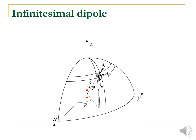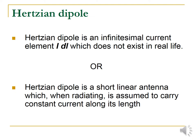Next we can see the graphical representation of an infinitesimal dipole along x, y and z axis. The Hertzian dipole is an infinitesimal current line that is ideal — it is denoted as ideal, which actually does not exist in real life. In simple words, the Hertzian dipole is a short linear antenna where the radiating is assumed to carry constant current along its length.